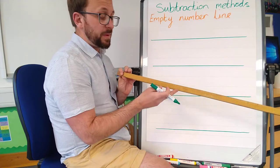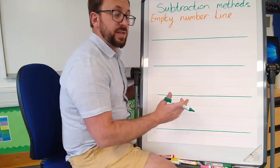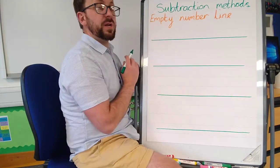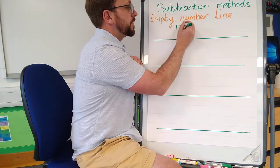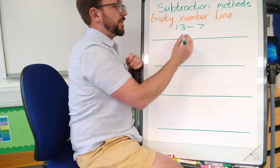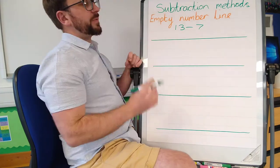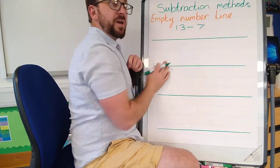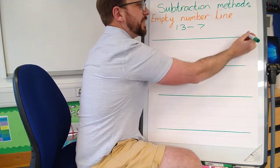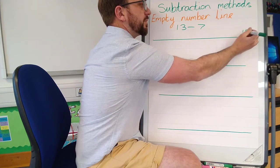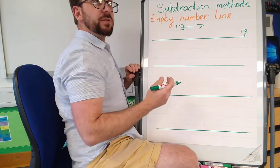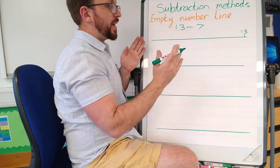Otherwise, start an empty number line. If I would like us to work out 13 take away 7. Now this is the tricky bit - I'm going to start at the other end because I'm coming backwards. Some children find counting backwards tricky, so sometimes it can help having a number line with them.